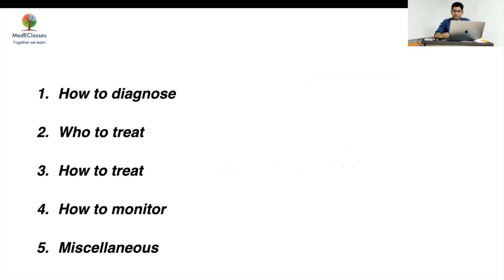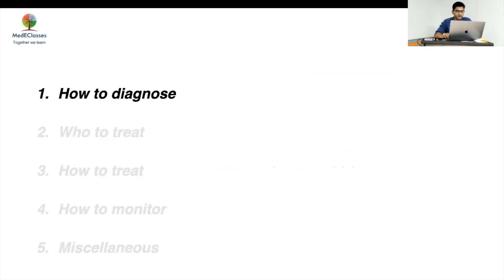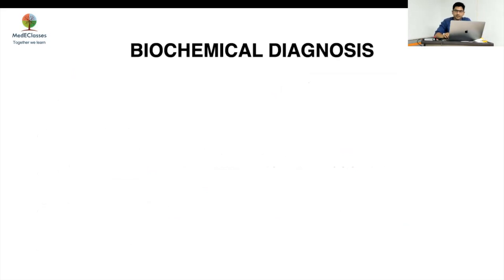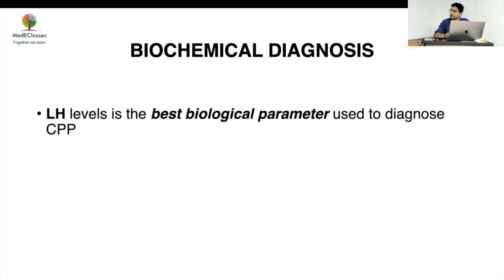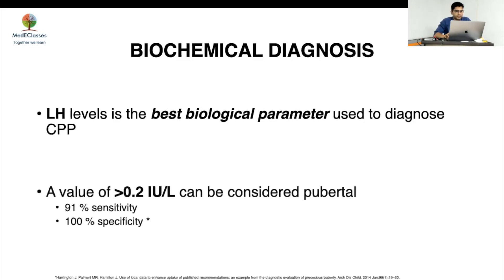Beginning with how to diagnose: the clinical diagnosis of precocious puberty is any girl with breast staging more than B2 at less than eight years, and less than nine years in boys with testicular volume more than 4 mL. Biochemically, LH levels are the best biological parameter to diagnose central precocious puberty (CPP). A value of more than 0.2 IU/L can be considered pubertal, with 91% sensitivity and 100% specificity.